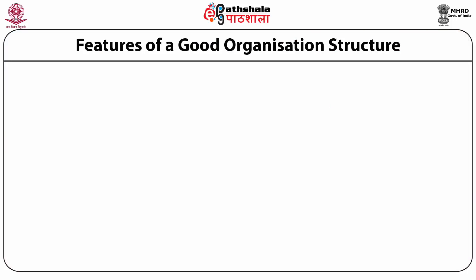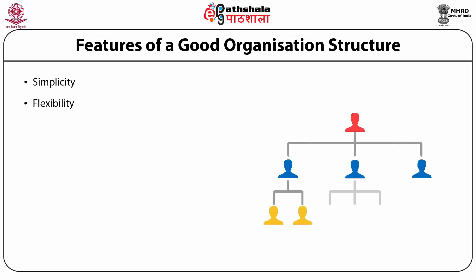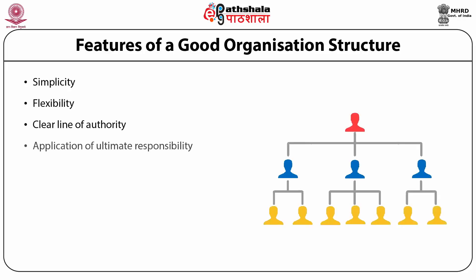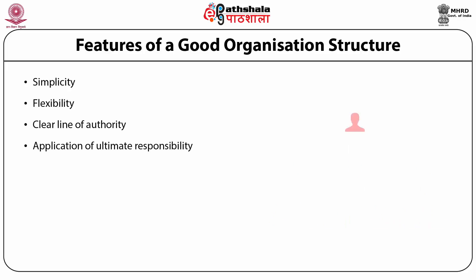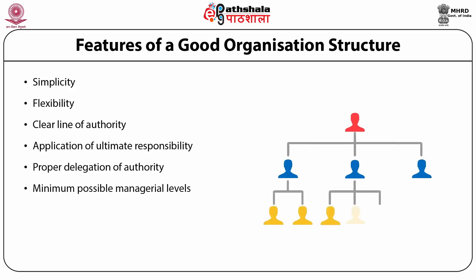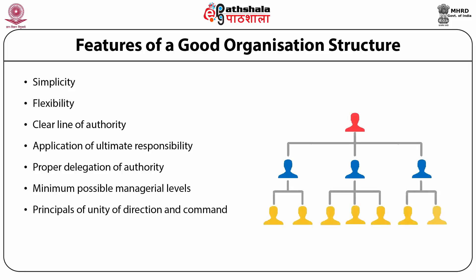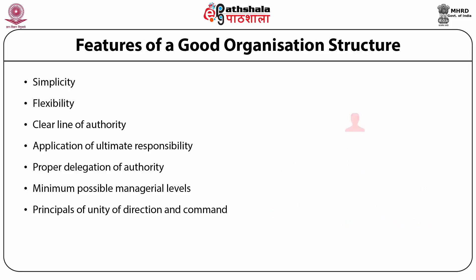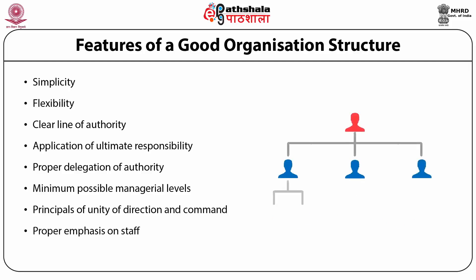A good organization structure should have the following features: simplicity, flexibility, clear line of authority, application of ultimate responsibility, proper delegation of authority, minimum possible managerial levels, principles of unity of direction and command, proper emphasis on staff, and provisions for top management.